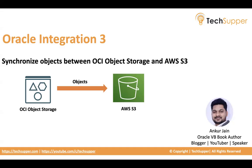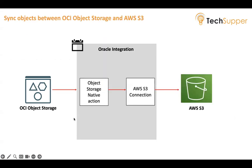Please be with me by the end of this video to get the most out of it. We are going to use Oracle Integration and build a schedule integration. In this schedule integration we are going to use the object storage native action provided by Oracle Integration, which will list the objects from object storage, loop over them, and then push them into AWS S3 bucket. We will leverage the AWS S3 adapter, and after the objects are successfully pushed, we are going to archive the objects from object storage.